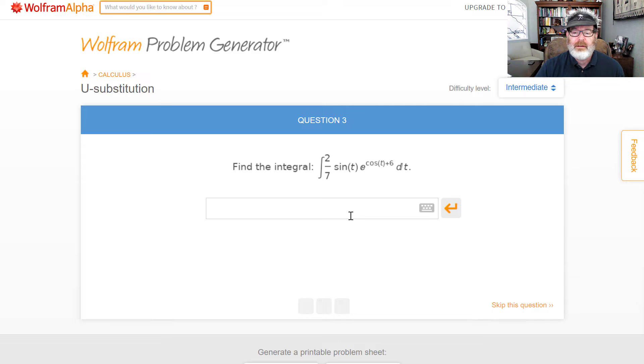E to a power would be e to the same power. I like using exp, usually works out well for me. So e to the cosine plus six.